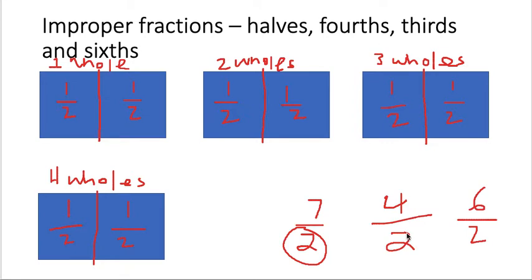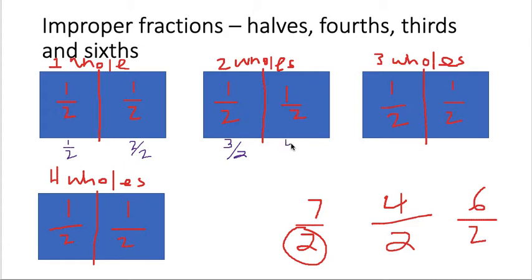We're going to count these up so you can see how large six halves is, how large four halves is, and how large seven halves is. So this is just one half. If I shade in two of these, it would be two halves. If I shade in one, two, three, it would be three halves. Now as you notice, three halves is more than one whole. So these fractions greater than one whole are improper fractions. Four halves — now we see how large four halves is. It's more than one whole, more than three halves. It's actually equivalent to two wholes.